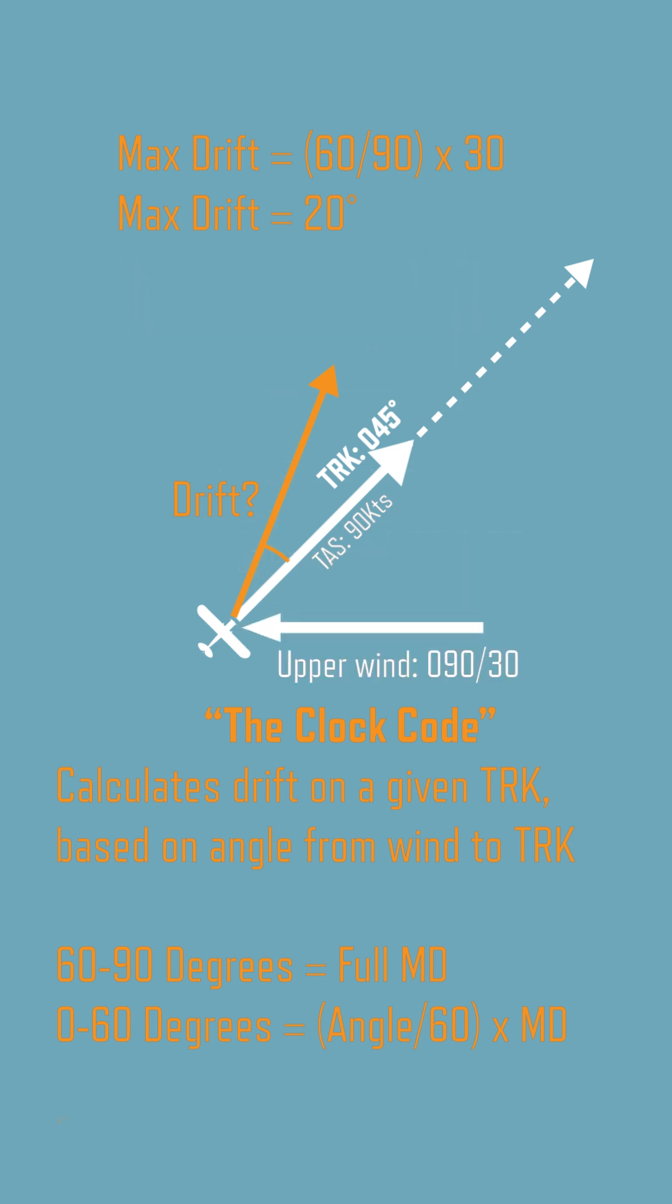Here, the wind is 45 degrees from the track. 45 divided by 60 is 0.75, so the drift is 0.75 times the max drift, or 15 degrees.